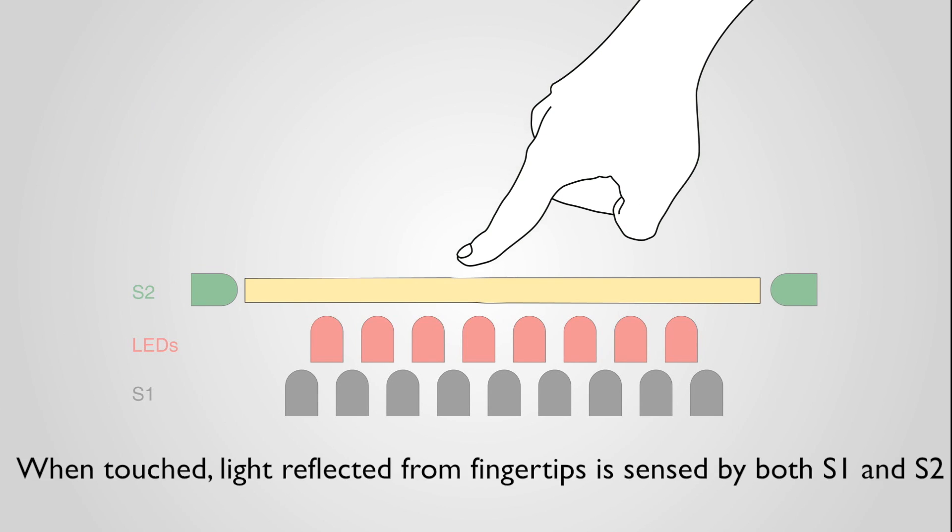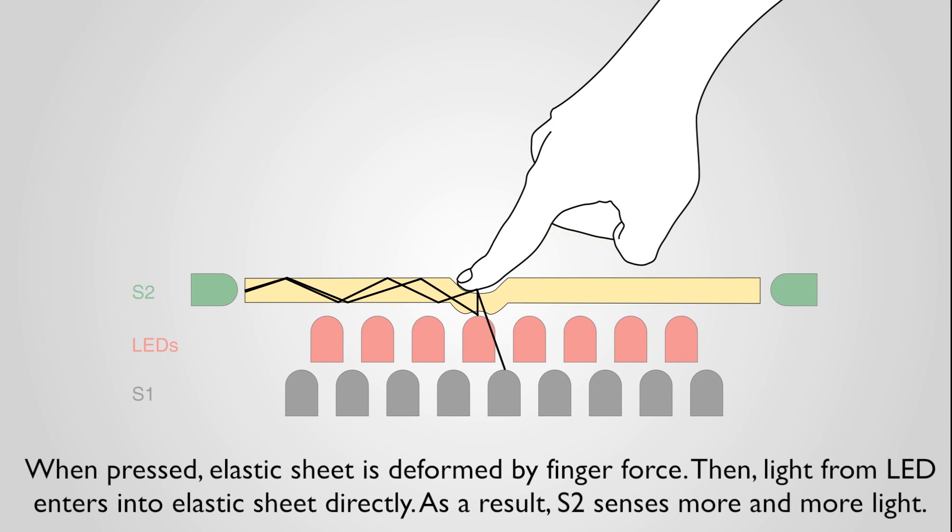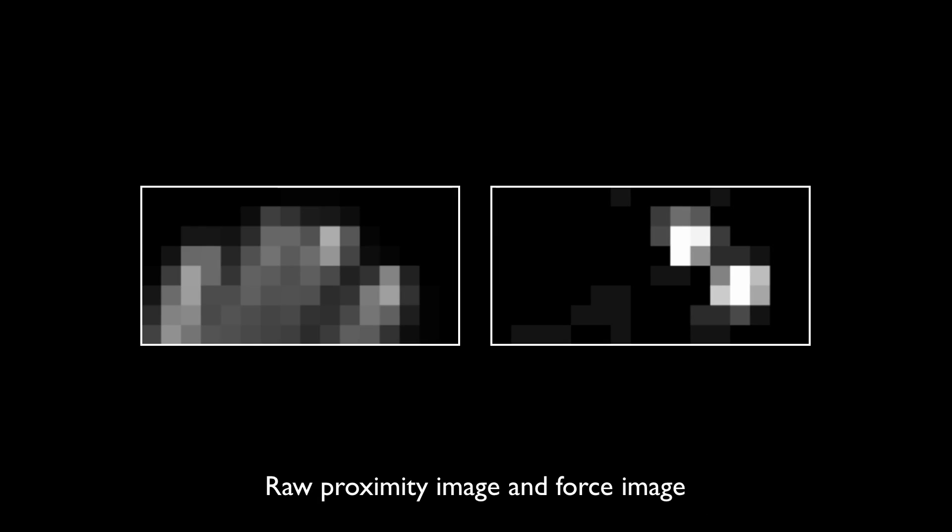When touched, the light is sensed by both S1 and S2. When pressed, the sheet is deformed and S2 senses more and more light.